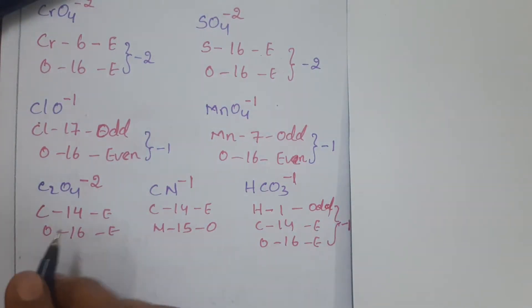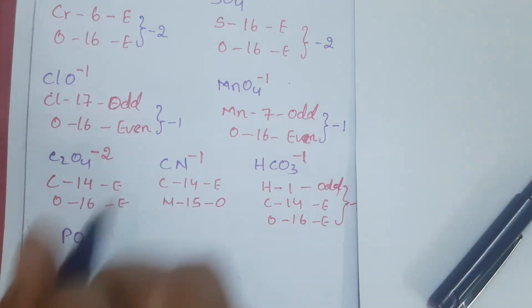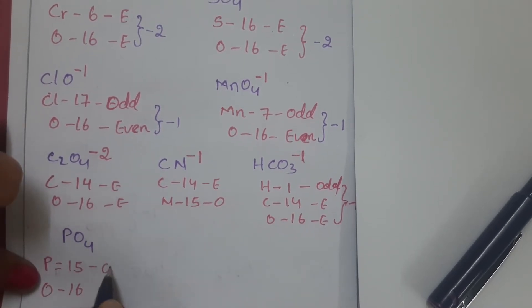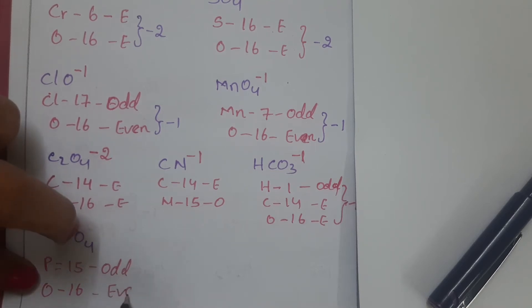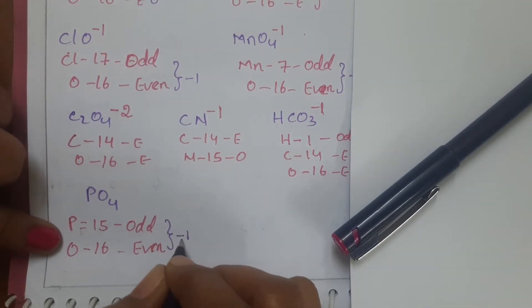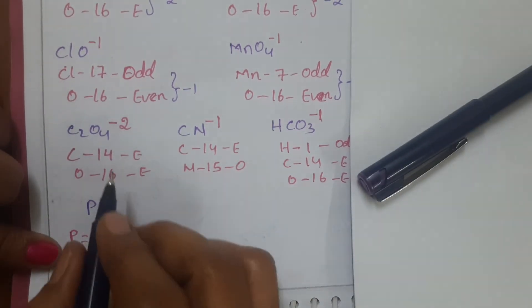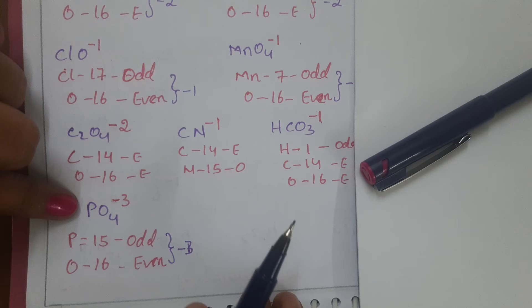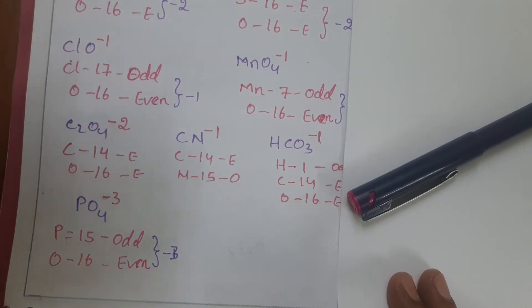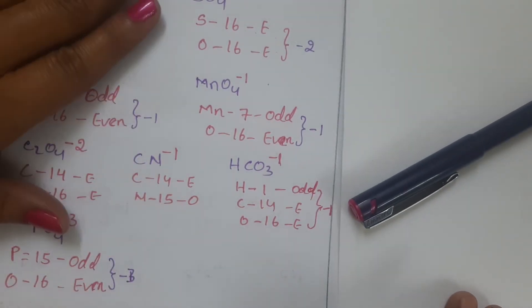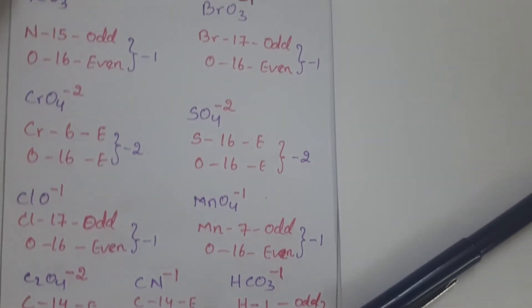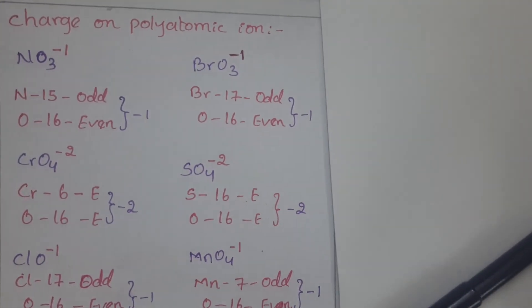Take PO4. Phosphorus belongs to the 15th group — odd number — and oxygen belongs to the 16th group — even number. One odd and one even would normally give minus 1, but instead you write minus 3. That is why it is an exceptional case. For PO4 only, this rule is not applicable. For any other polyatomic ion, we can follow this trick.